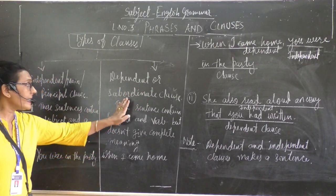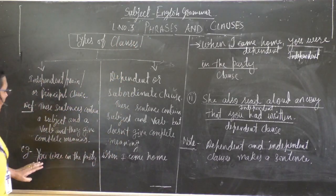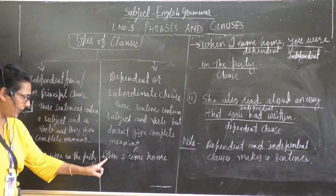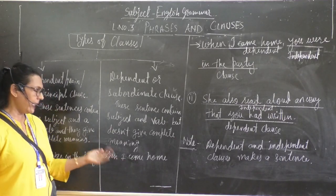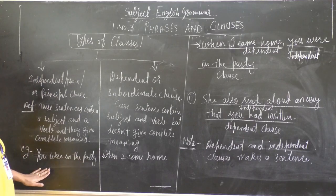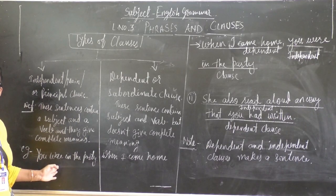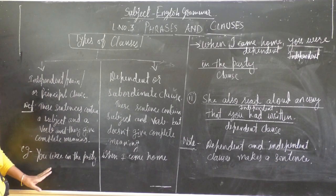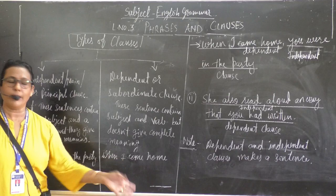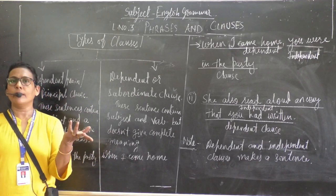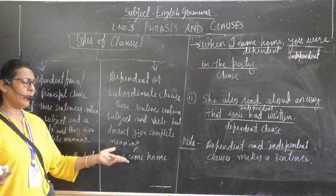So, here is an example. For example: 'you were in the party' — this is an independent clause. And the dependent clause example is: 'when I came home.' See — I is the subject, came is the verb. But still, 'when I come home' alone does not give complete meaning. You need more information.